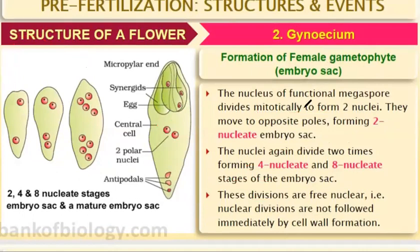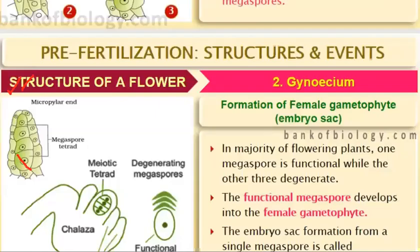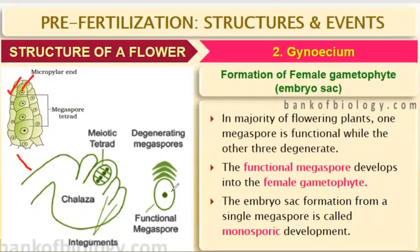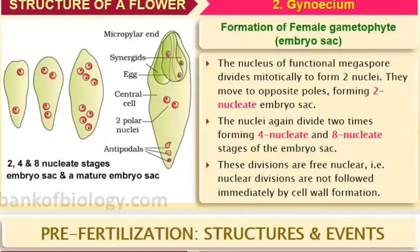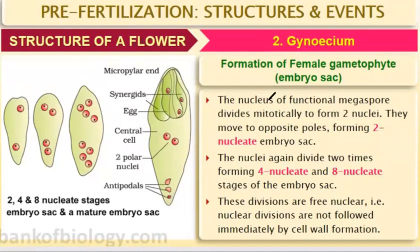The nucleus of the functional megaspore divides mitotically to form nuclei. This functional megaspore has a micropylar end and a chalazal end. The nucleus divides mitotically — these divisions are free nuclear divisions, meaning the nucleus divides without cell wall formation. Each resulting nucleus is haploid because the original haploid cell undergoes mitosis, so two haploid nuclei form.